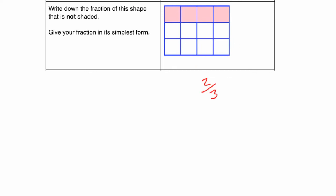Another way to do the question is to count up all the squares. That would be 4, 8, 12. And there's 8 of them not shaded. And then you can divide both of those by 4, and that would give you 2 thirds also. So what fraction of the shape is not shaded? 2 thirds.